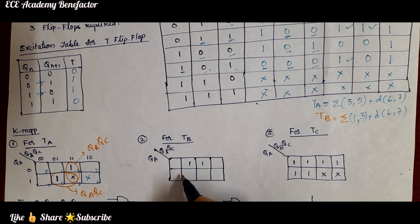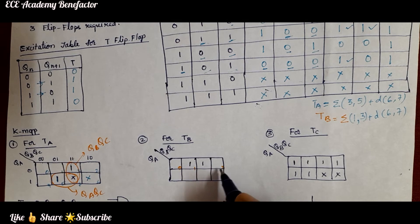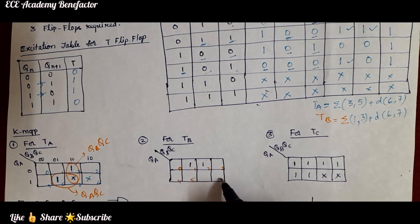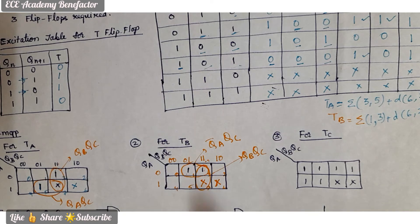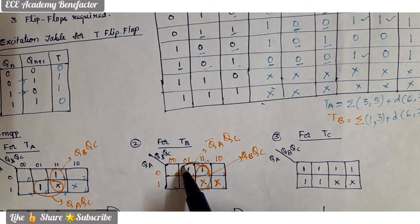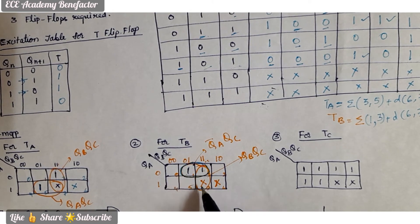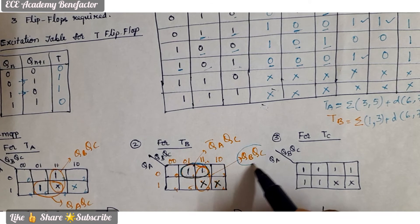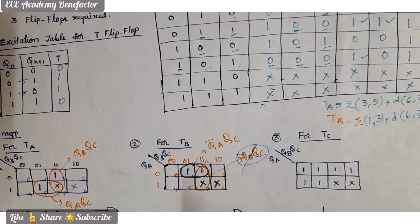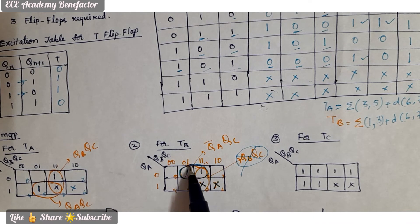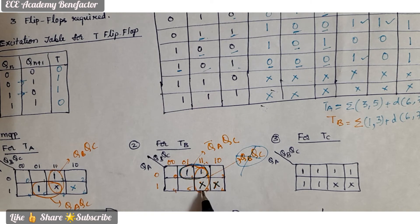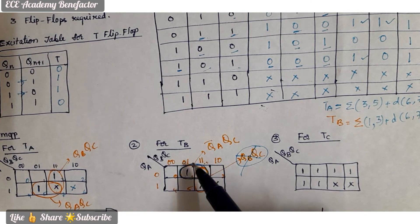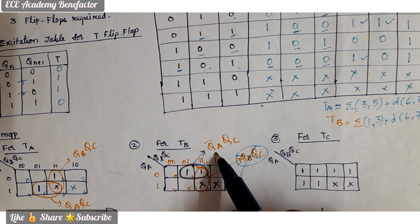Looking at the TB K-map, there is a grouping at cells 1 and 3. Since all 1s are covered by this grouping, there is no need for additional groupings with the don't cares. This grouping gives Q̄A·QC. So the equation for TB is: TB = Q̄A·QC.